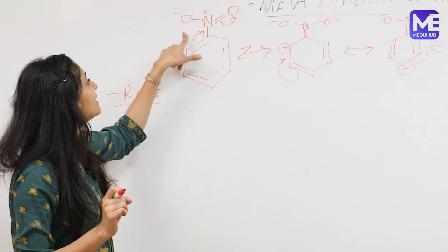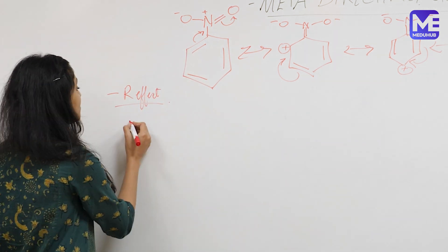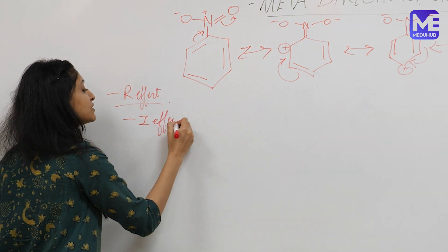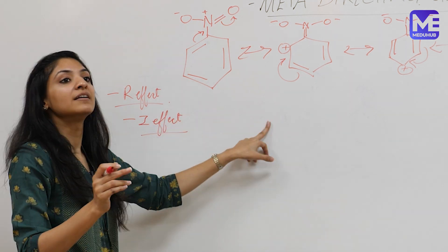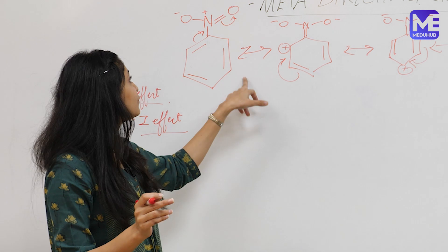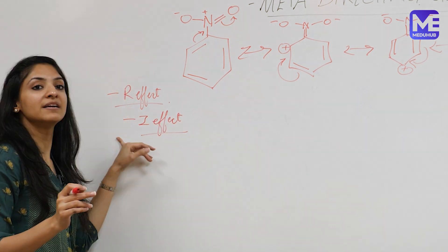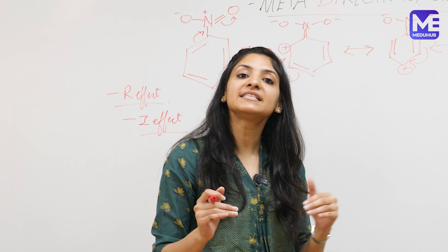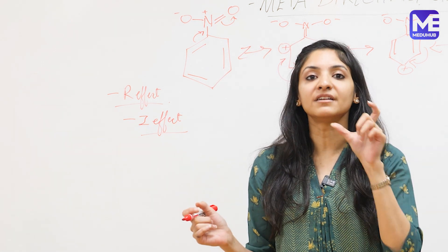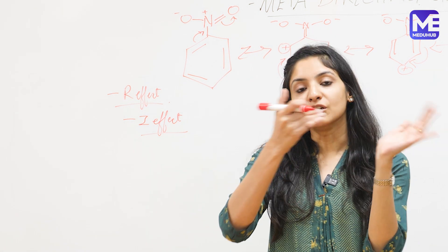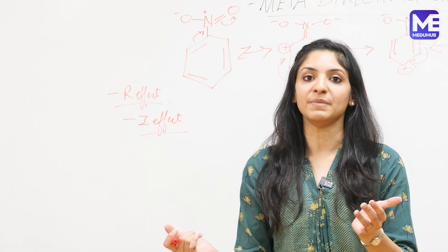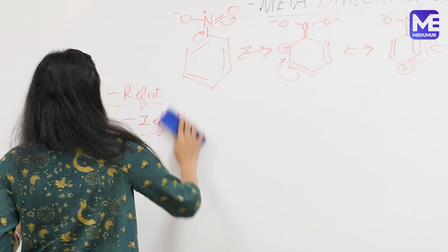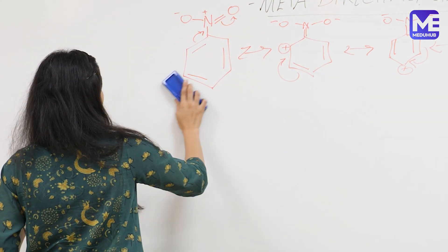The nitro group also has a strong minus I effect, pulling electrons away from the ring. Because of its minus R and minus I effects combined, the nitro group is a deactivating group — meaning the reaction is slower than in benzene.